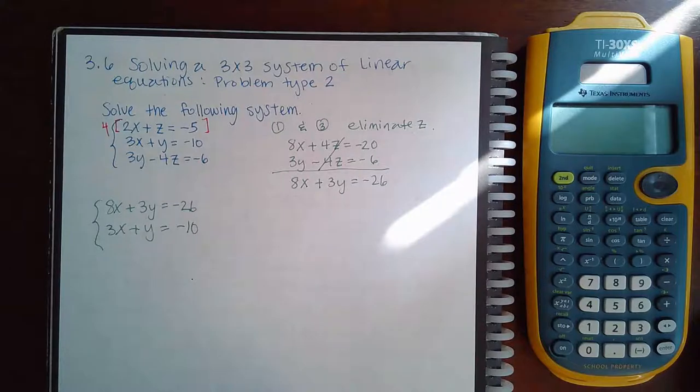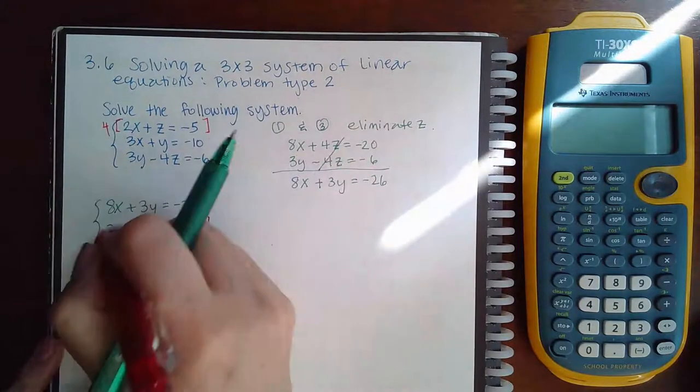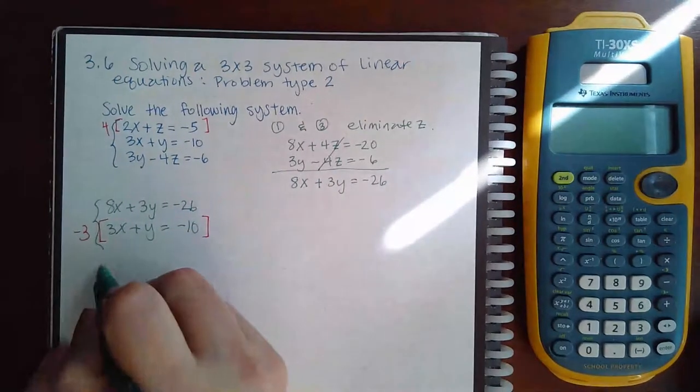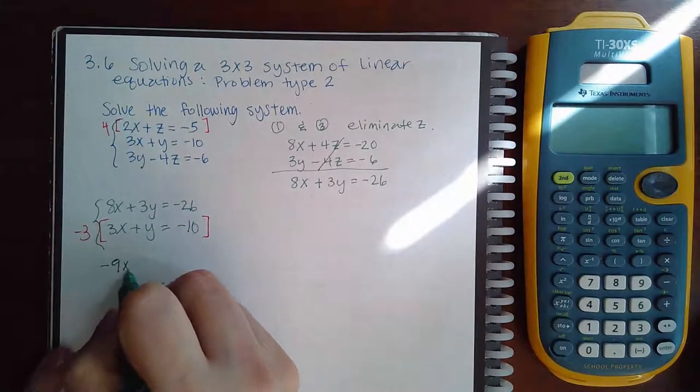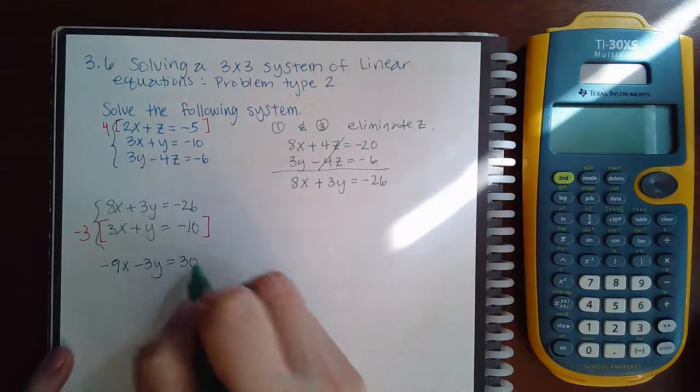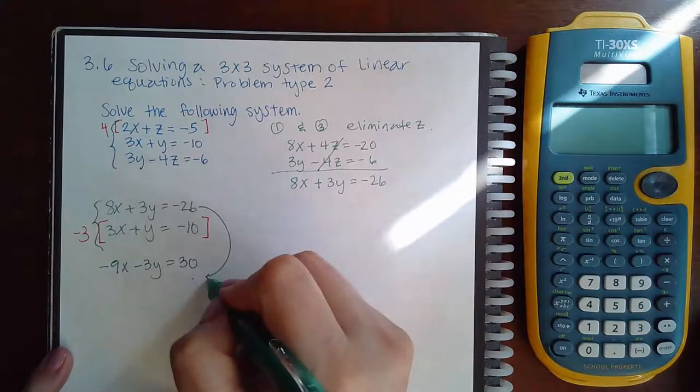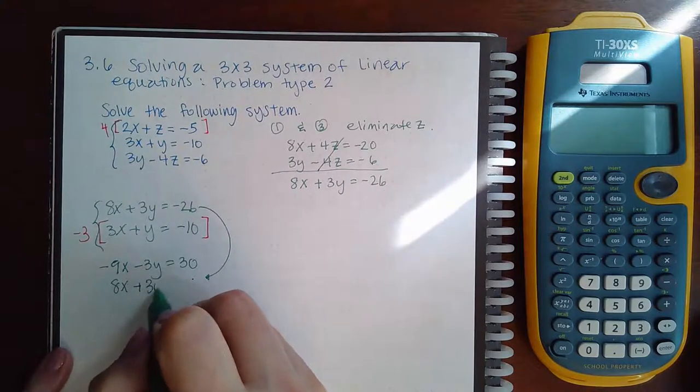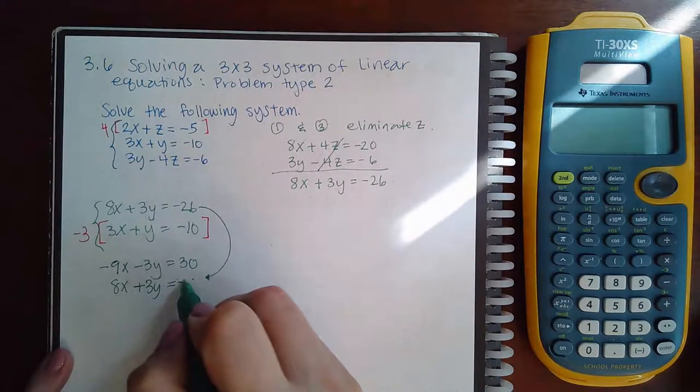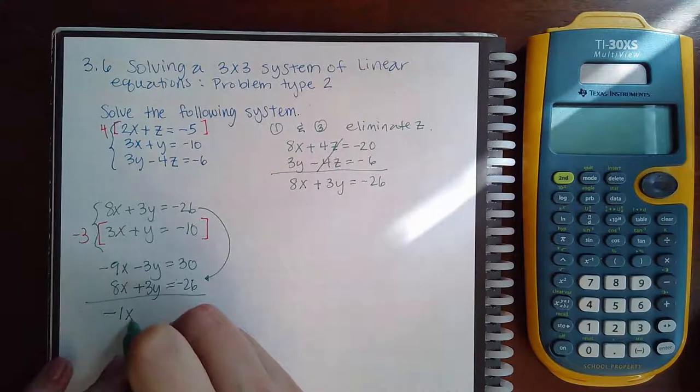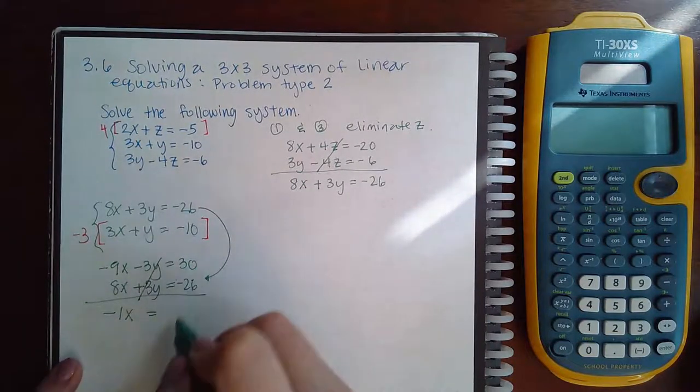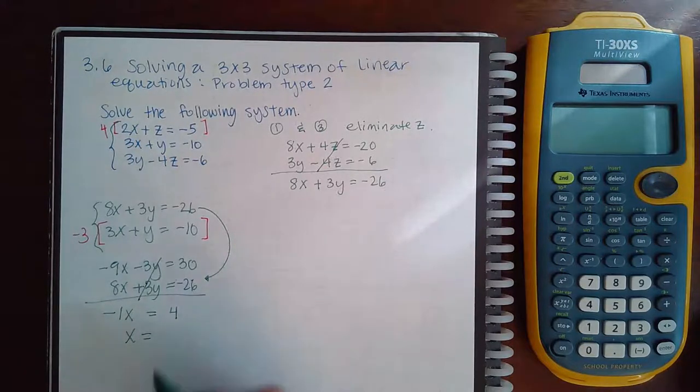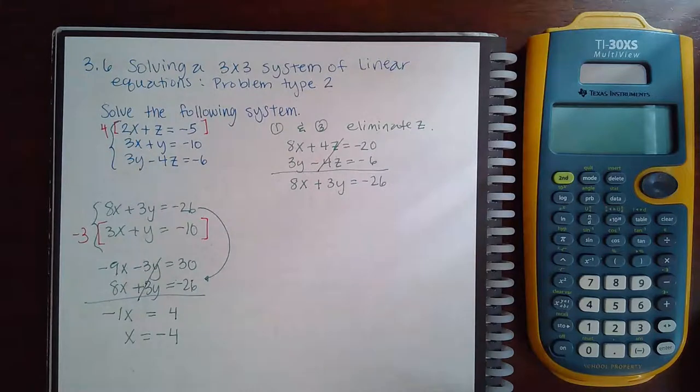And then solving this system I would have to multiply the bottom equation by negative 3 giving me negative 9x, negative 3y, and positive 30. And then I'm just going to rewrite the second one underneath plus 3y equals negative 26. And then that would give me negative 1x. Those would cancel and I would have 4 positive. And then if I divide both sides by negative 1 I get that x equals negative 4.